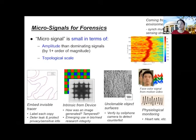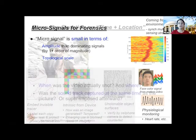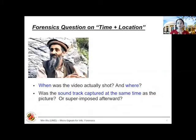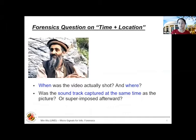What I want to share today are two types of micro-signals: those representing properties of the surrounding environment, and those used to track vital signs. I'll start with environmental micro-signals, motivated by the forensic question: when you have a piece of a recording, when and where was it captured? My favorite example is the propaganda videos of bin Laden — whenever he released one, people fighting terrorism around the world wanted to know when and where the video was shot.